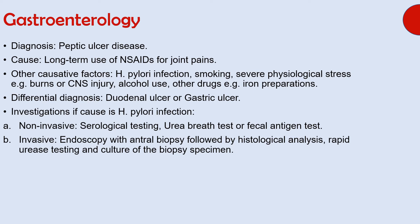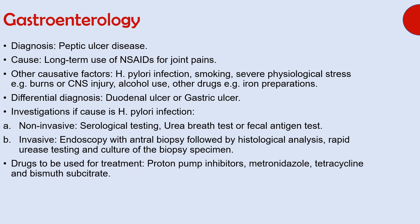The last part asked about drugs to be used for treatment if the cause is a bacterial infection. These drugs include proton pump inhibitors, metronidazole, tetracycline, and bismuth substrate — this is quadruple therapy for eradication of H. pylori infection. There is also a triple therapy which we will discuss in one of the next questions. Here are the reference page numbers from Davidson's.